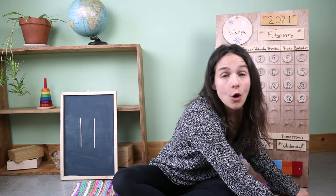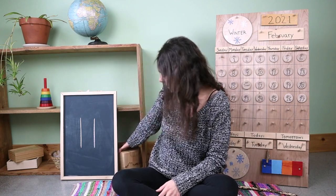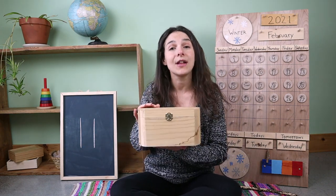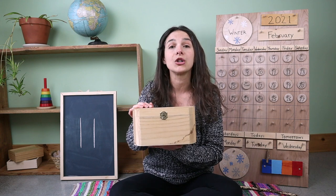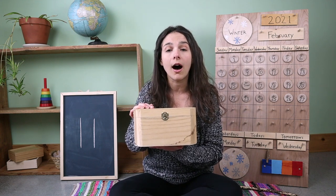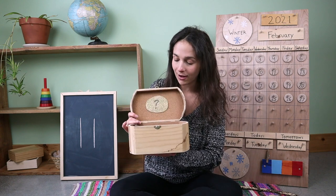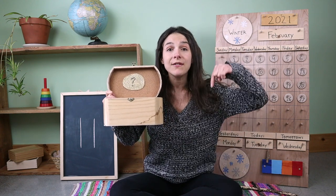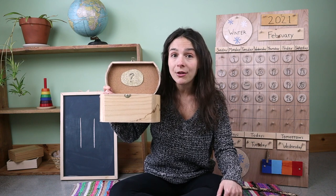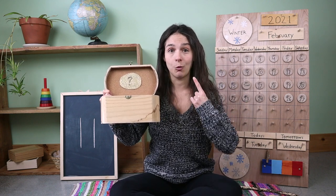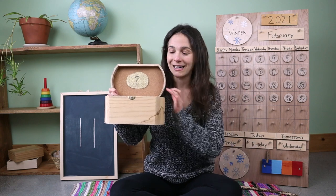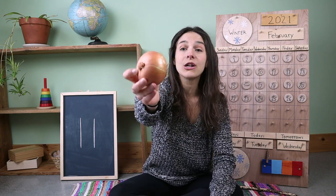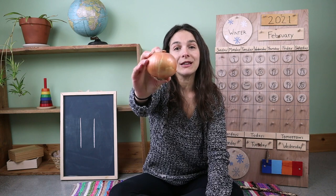Now it's time to guess what's inside of my number and letter box. Inside of this box, I have something that starts with the letter o, and this makes a short o sound — ah. Are you ready for your first clue? This is a type of a root vegetable. A root vegetable is a type of vegetable that lives under the ground, and when you prepare this vegetable, sometimes it makes your eyes water. Do you know what it is? Here it comes — this is an onion. An onion is a root vegetable. An onion starts with the letter o.